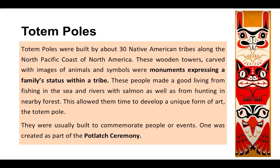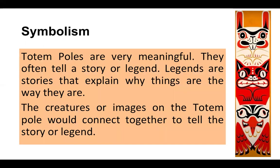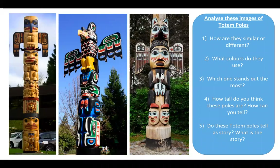One was created as part of the potlatch ceremony. This is a picture of a totem pole and if you look carefully you can see three creatures — these are typical of the kind of designs that were created on these wooden statues. Totem poles are very meaningful. They often tell a story or legend. Legends are stories that explain why things are the way they are. The creatures or images on the totem pole would connect people to tell the story or legend. Here you can see three rather large statues all carved from wood, with lots of different creatures and faces carved into the wood.